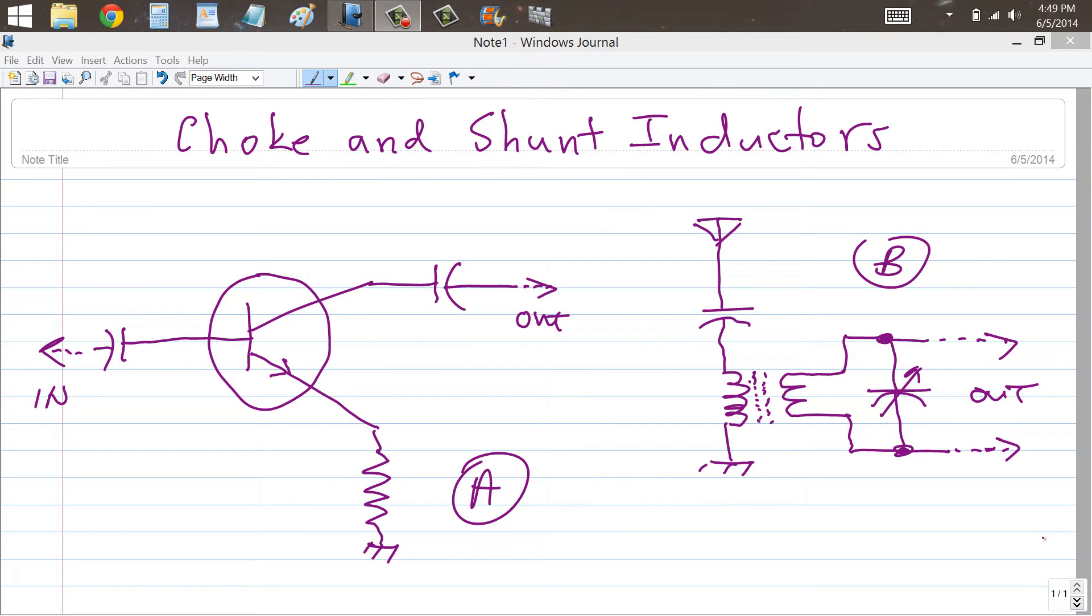Stan Jibalisco here with a little discussion of the counterpart to blocking and bypass capacitors in regards to inductors. Inductors can serve similar purposes in electronic circuits in certain applications. We would call them choke and shunt inductors. Choking meaning to block something and shunting meaning to bypass something.